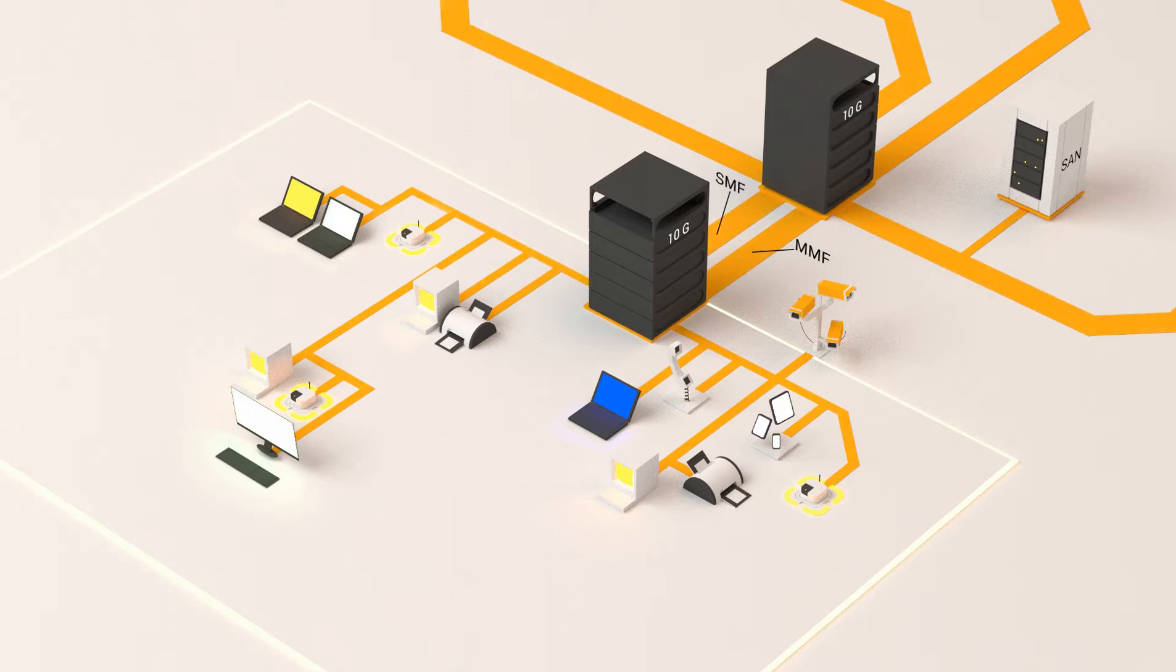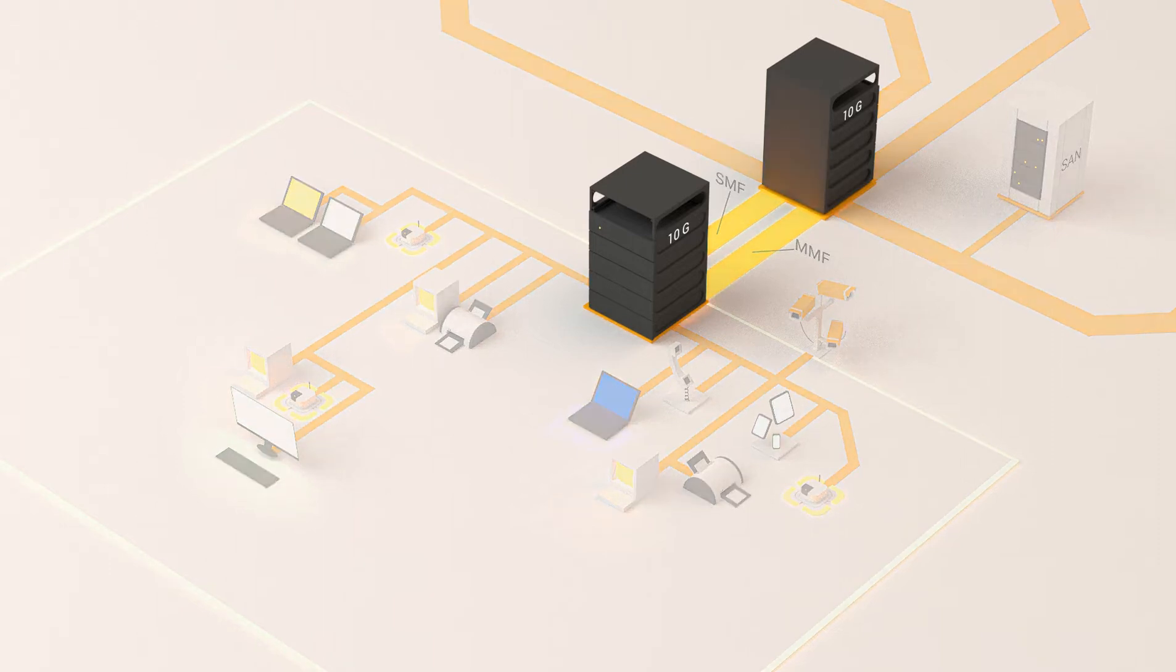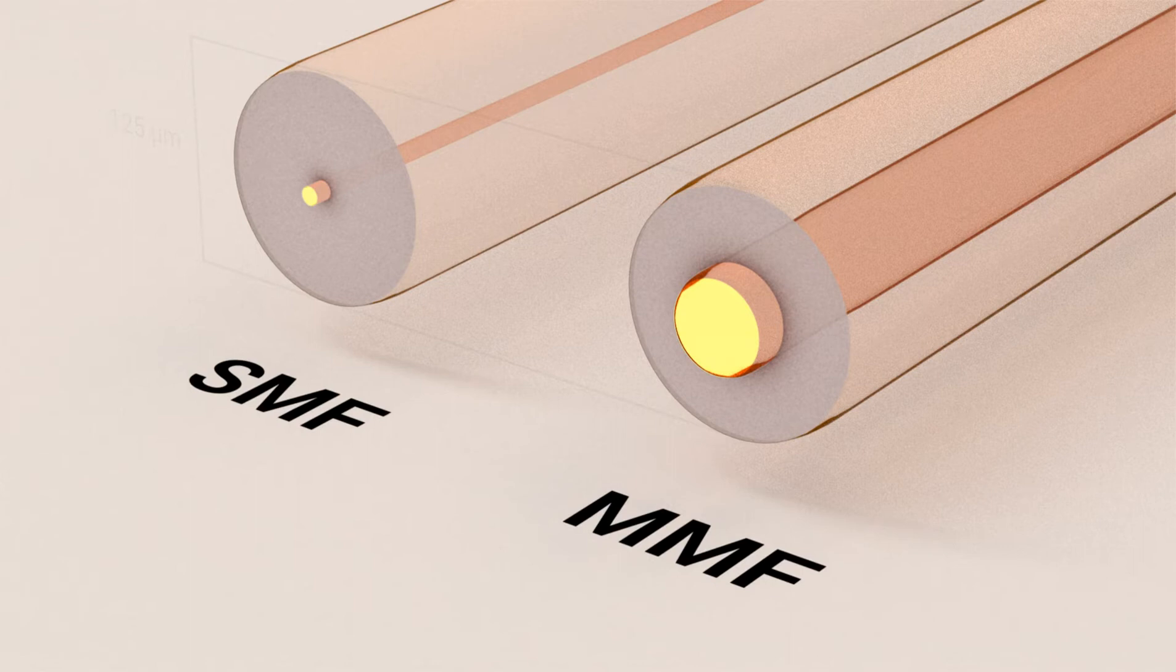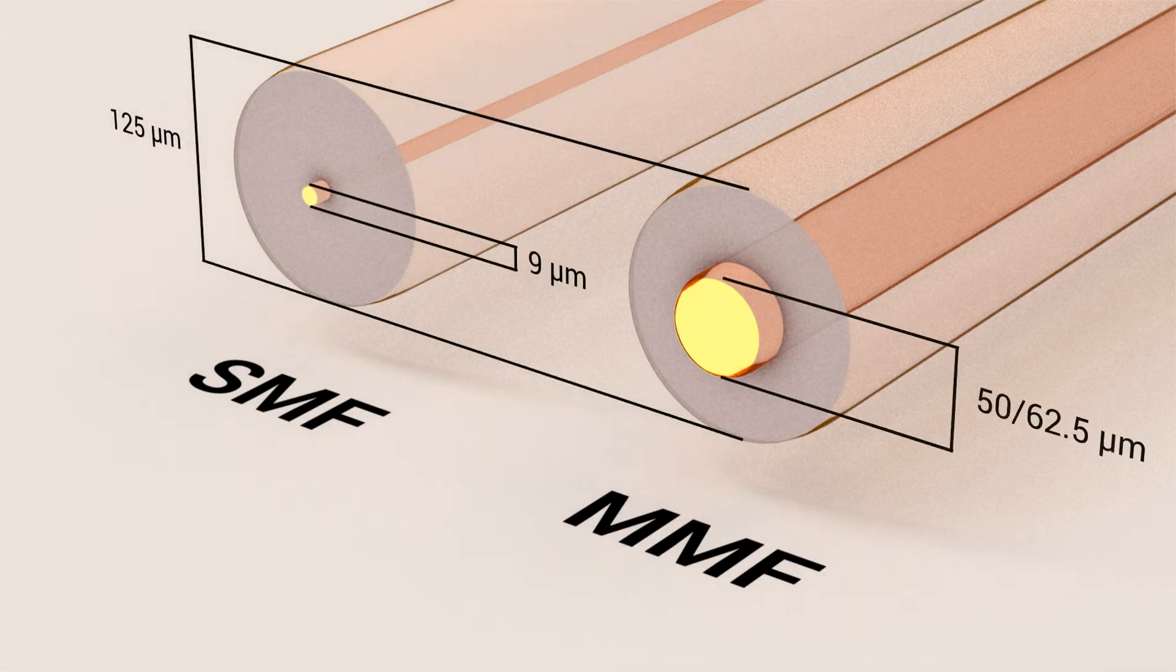Let's have a closer look on how optical fibers work. An optical fiber is composed of a transparent core, generally in glass, surrounded by a glass cladding which confines and guides the light.